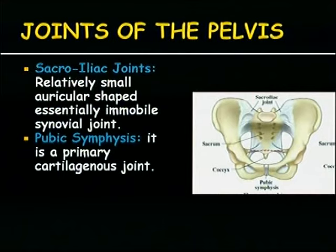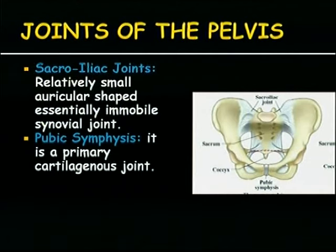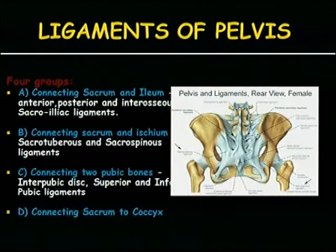So what can go wrong with the bone? We should know the joints of the pelvis: the pubic symphysis and the sacroiliac joints. The sacroiliac joints are stronger, while the pubic symphysis joint is slightly more expandable.